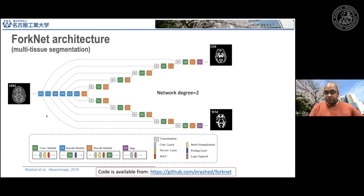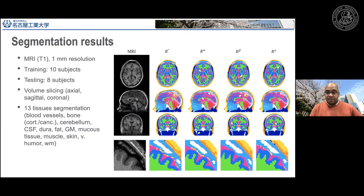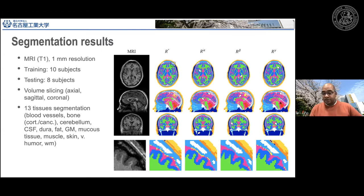Here are segmentation results showing brain and non-brain tissues. We target 13 major head tissues. The first column shows the MRI, the second shows the ground-truth segmentation based on a semi-automatic method with manual editing. The next columns show segmentation across different orientations: axial, sagittal, and coronal. There is some variation when we change the slicing orientation.